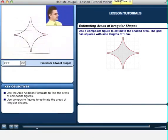And I want to note that the grid has squares with side lengths of one centimeter. So what do I do? What I want to do is make a composite figure.